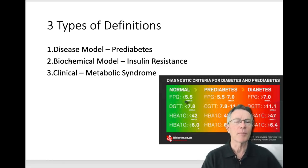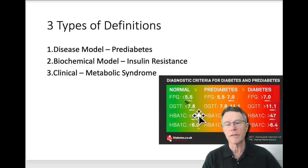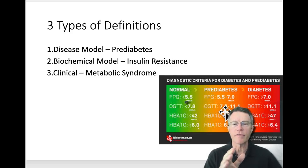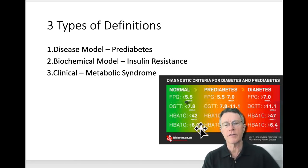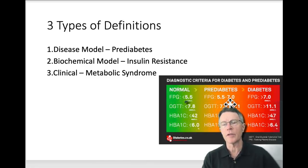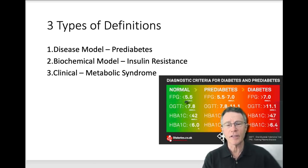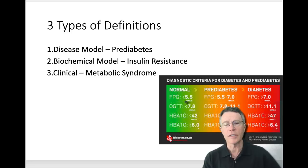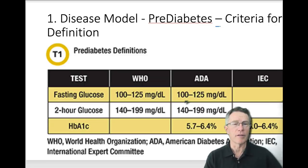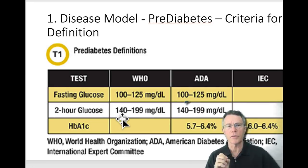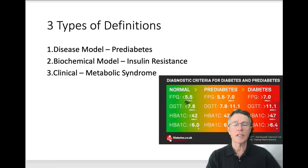Let's go a little bit deeper. As you see on here, there are different ways of defining the transition from normal to pre-diabetes to diabetes. This is from the UK, so you see fasting plasma glucose numbers — between 5.5 and 7.0 being pre-diabetes. The hemoglobin A1c numbers are not fairly standard; there's a good bit of variation. And the OGTT — those numbers are in metric. So let's move on. Remember we talked about number one, the disease model: pre-diabetes.